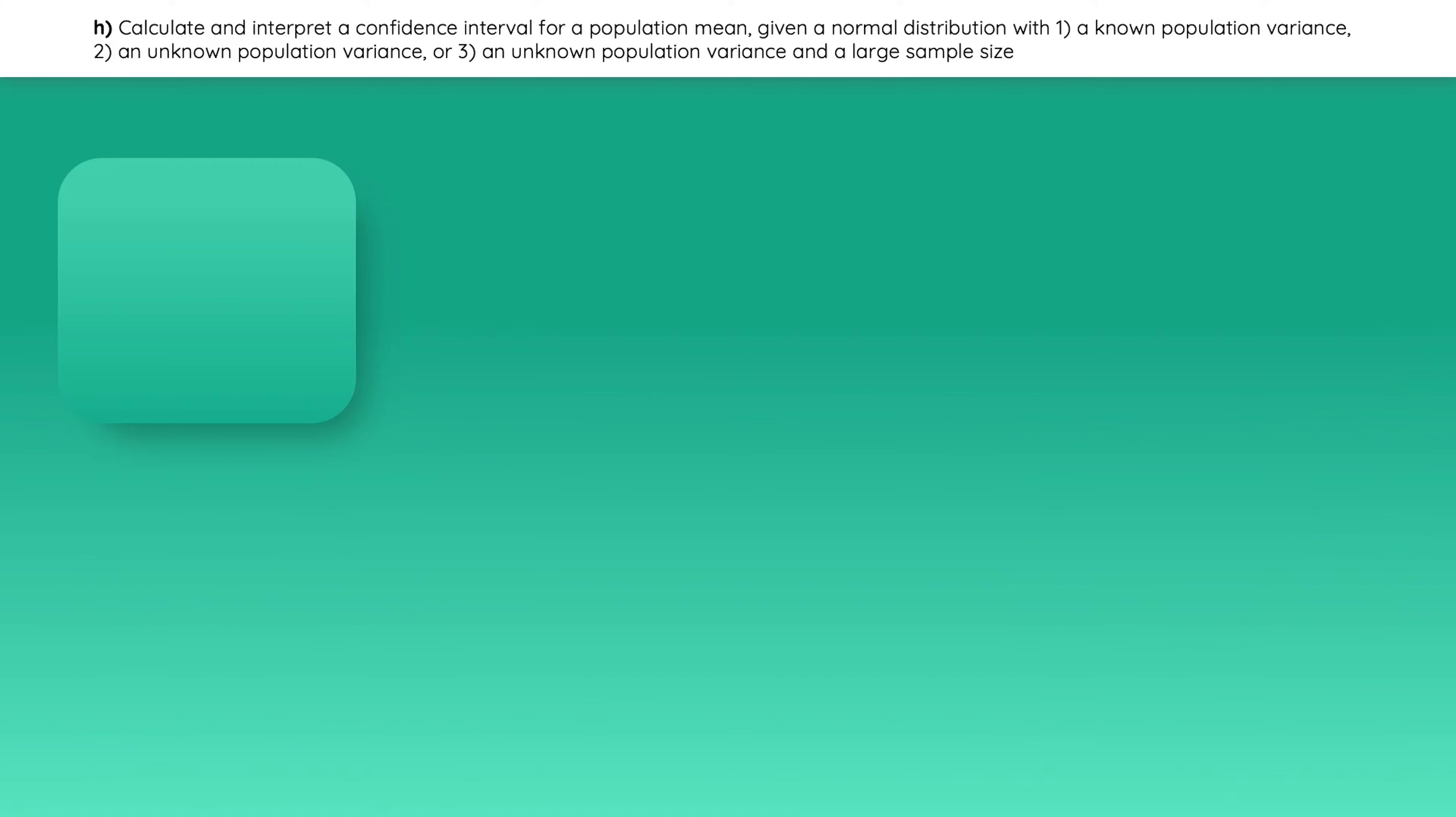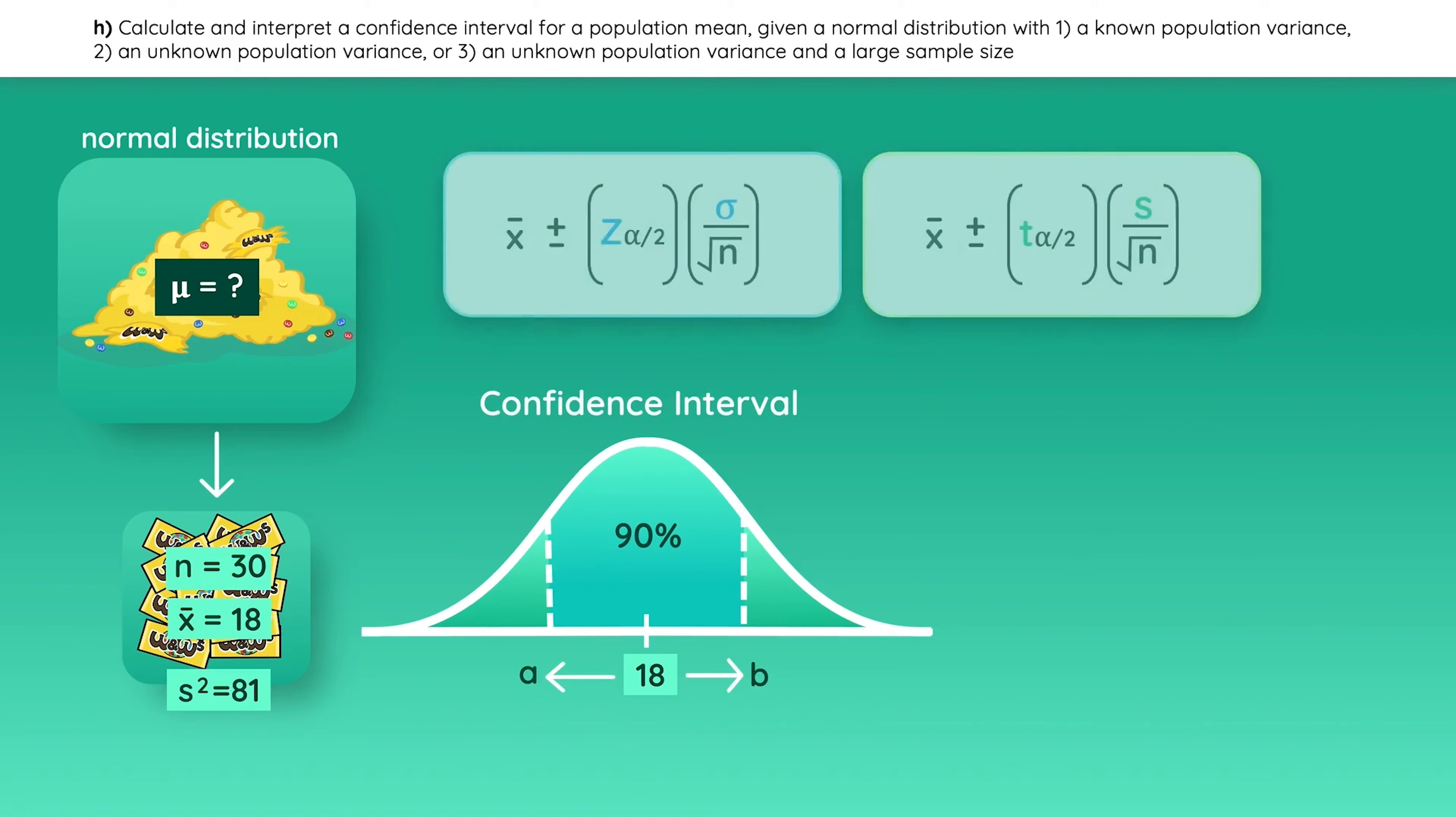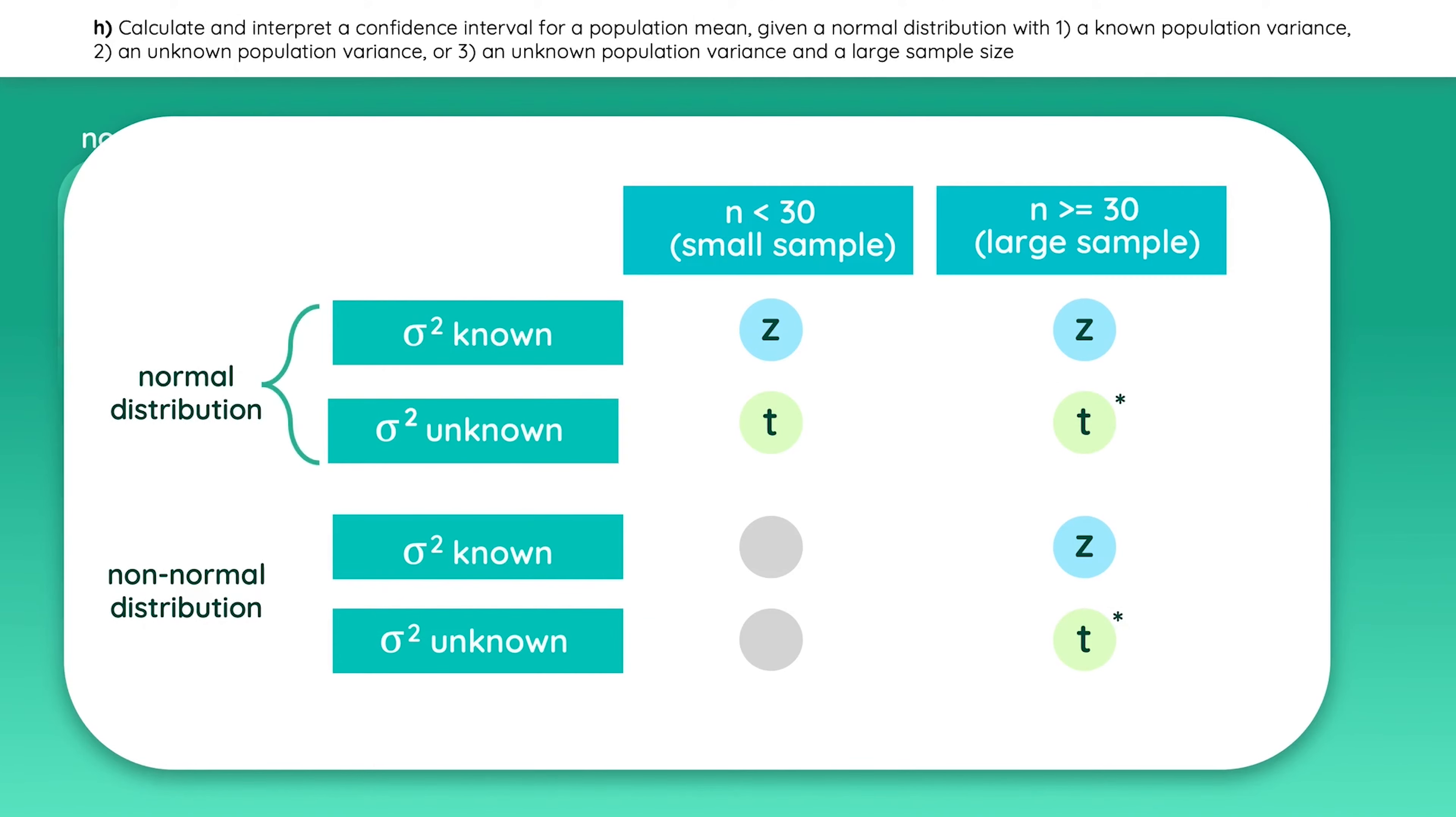Now let's actually calculate the confidence interval we were solving for before. As a quick recap, we don't know the population mean, but we know that the sample mean was 18 pieces per bag. We want to calculate the 90% confidence interval to estimate the population mean. Assume the population is normally distributed, and the sample variance is 81. To create a confidence interval, which of the two formulas should you use? Take a look at the cheat sheet. The population is normal, but we don't know its variance, so we must use t values to create the confidence interval.